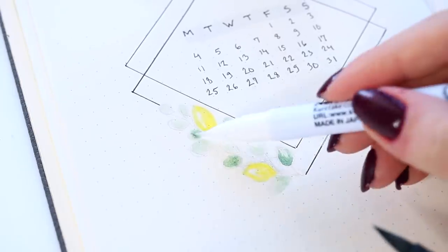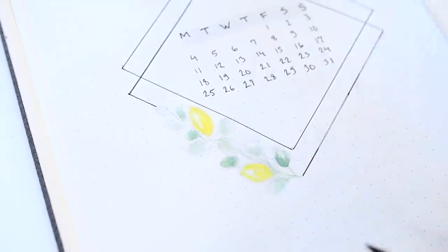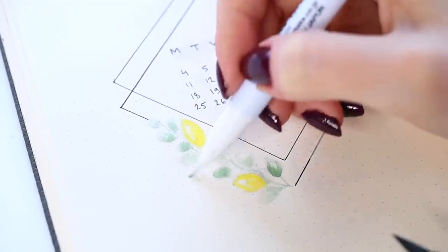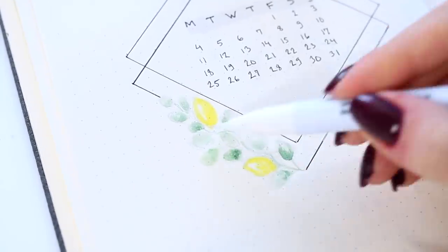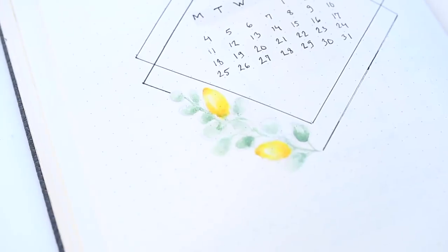You can see me adding this small lemon leaf detail under the calendar. I know these probably aren't actual lemon leaves. My inspiration for the leaf design this month were eucalyptus leaves. But I don't know if these look anything like those either. Probably not.